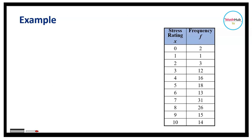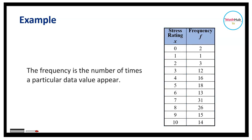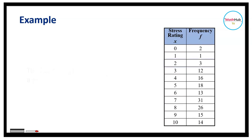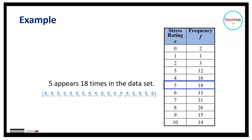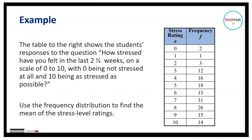This is an example of a frequency distribution table. The columns show the different data values and their frequencies. Frequency is the number of times that data value appeared — for instance, the value 2 appears three times, and the value 5 appears 18 times. This table shows students' responses to the question: how stressed have you felt in the last two and a half weeks on a scale of 0 to 10, with 0 being not stressed at all and 10 being as stressed as possible. We will use this frequency distribution table to find the mean stress level rating.